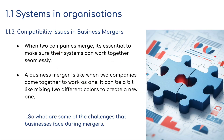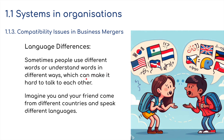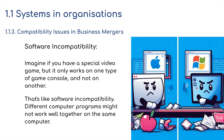When two companies merge, it's essential to make sure their computer systems can work together seamlessly. A business merger is like when two companies come together to work as one — like mixing two different colors to create a new one. One challenge businesses face is language differences: some systems use different words or interpret data differently, making it hard to communicate. The classic Apple versus Microsoft example gives a good clue as to what's going on here.